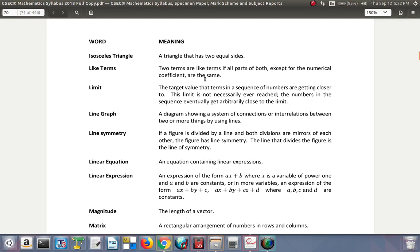Like terms: two terms are like terms if all parts of both, except for the numerical coefficient, are the same. The numerical coefficient would be the number that multiplies it.